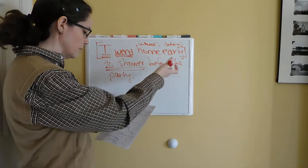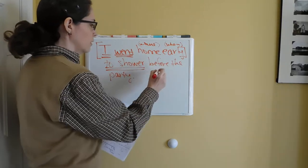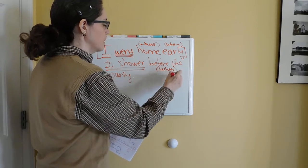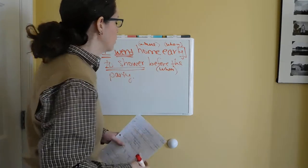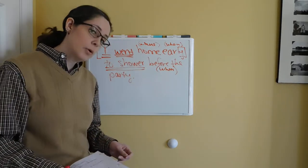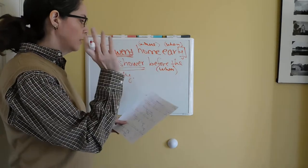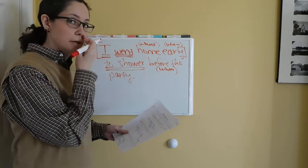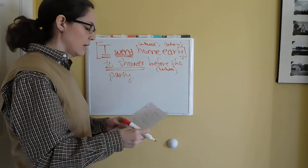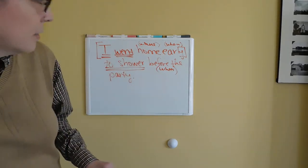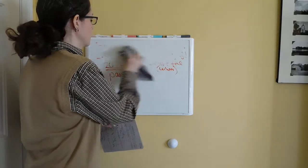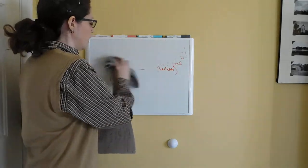'To shower' — this phrase — 'before the party,' which again explains when, which is adverbial information. When did I go home to shower? Before the party. So you're going to have to diagram all of this in your sentence. This is a long enough sentence that I'm just going to erase the whole thing and then show you.